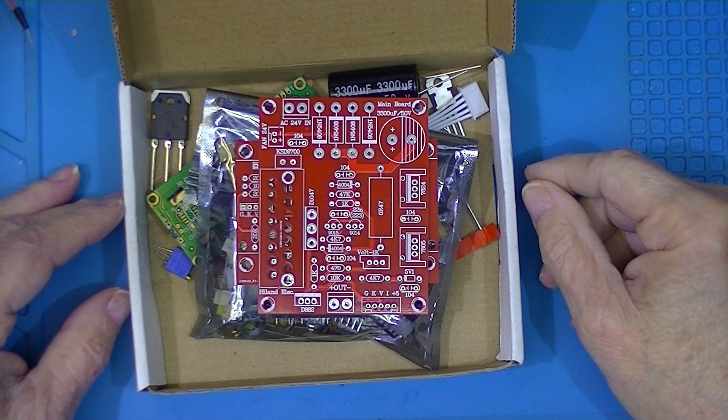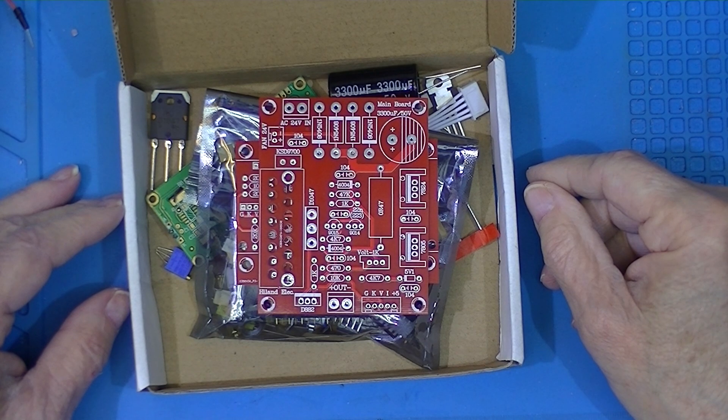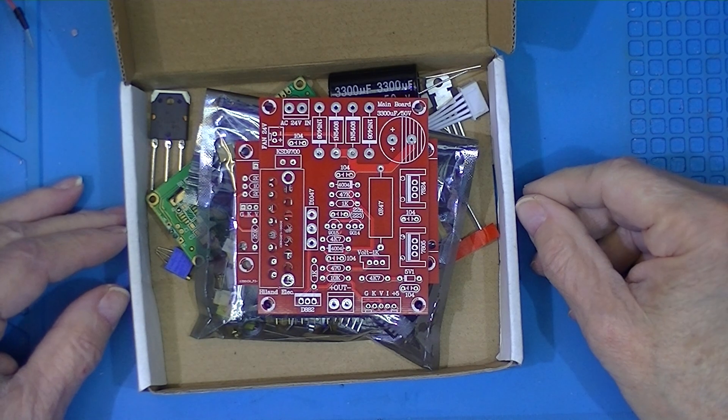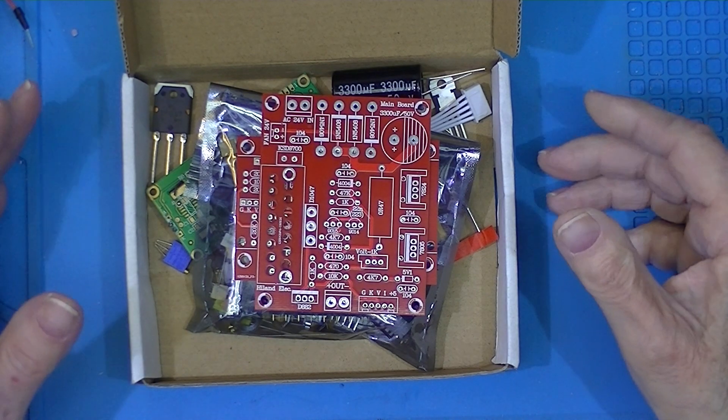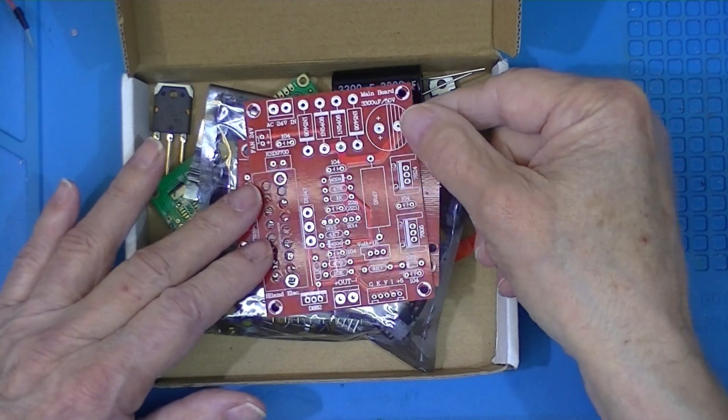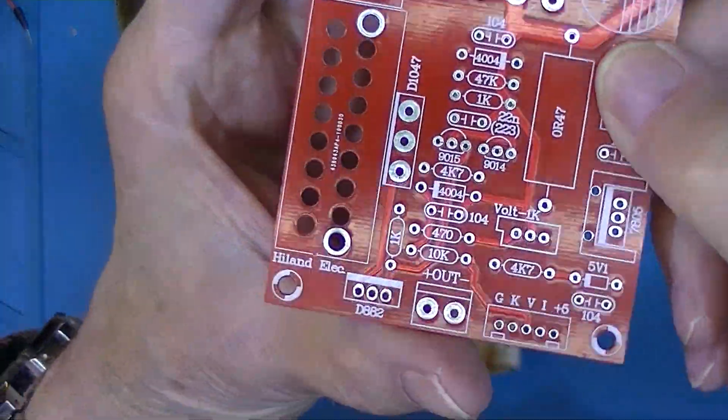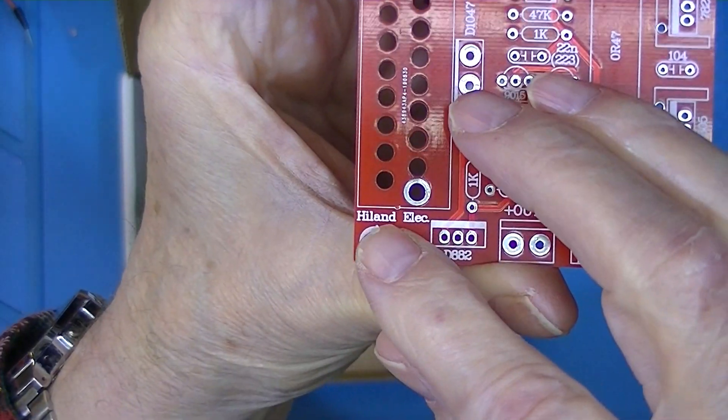This is a Highland 20 volt 2 amp power supply kit sold on AliExpress, Banggood and eBay. eBay has had them since probably 2015. When I say Highland, I'm referring to the original manufacturer - they all seem to be marked like this.